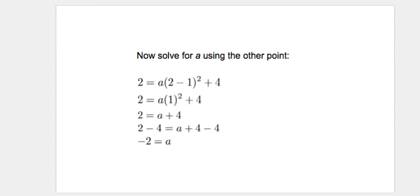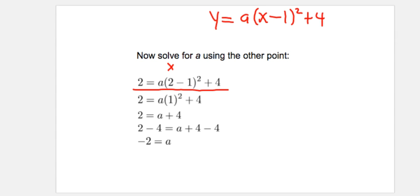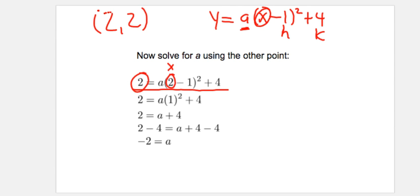Now I'm going to solve for A using the other point. After substituting H and K, we have Y equals A times (X minus 1) squared plus 4. I want to solve for A, so I use that other point, which was 2, 2. The Y value is 2, so I substitute 2 in there, and my X value was 2, so I substitute 2 in there as well.